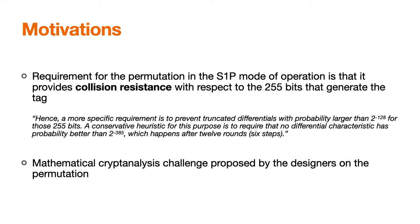In the Spook specification, the security analysis of the mode of operation used, S1P, relies on the assumption that the permutations are random and that they provide collision resistance. It turns out that we were able to challenge this assumption by exhibiting distinguishers for the permutations, which we then used to find a practical collision on 128 bits of the output. In doing so, we also solved the first mathematical cryptanalysis challenge on the permutation proposed by the designers.